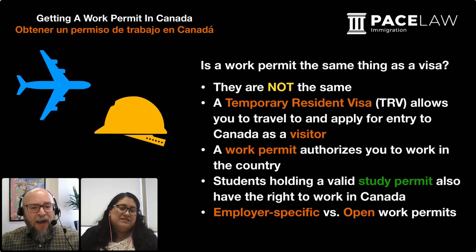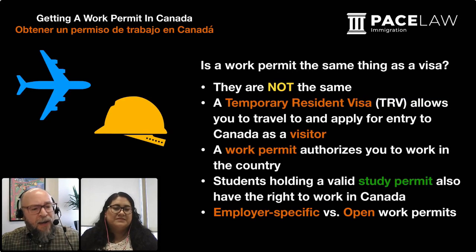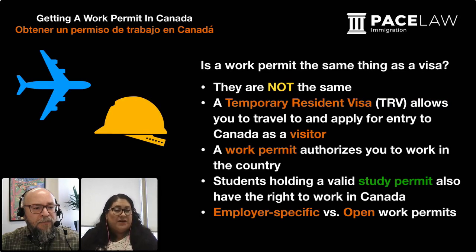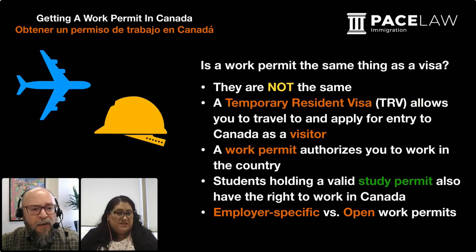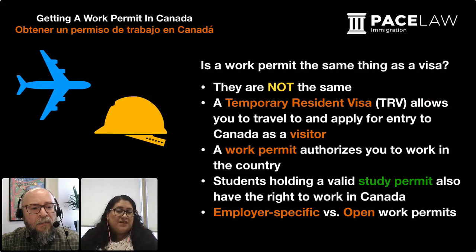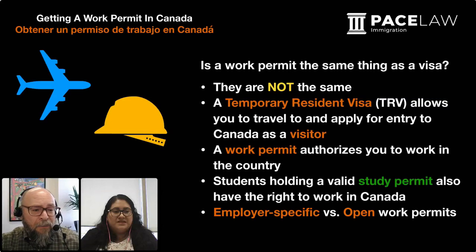An ETA doesn't allow you to work — correct, it doesn't. So the TRV or ETA does not allow you to work in Canada. With work permits there are two types in Canada: employer-specific and open work permits. An employer-specific work permit is tied to one specific employer. With an open work permit you are free to choose which employer you work for. People who typically get open work permits include students, spouses of work permit holders, people applying for spousal sponsorship inside Canada, and refugee claimants inside Canada. Employer-specific work permits are most likely the majority of work permits we see.